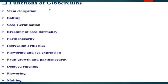What are the functions of Gibberellins? They help in stem elongation, bolting, seed germination, breaking seed dormancy, parthenocarpy, increasing fruit size, flowering and sex expression, fruit growth, parthenocarpy and delayed ripening, and flowering and malting.